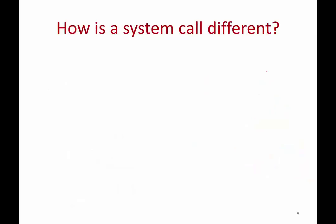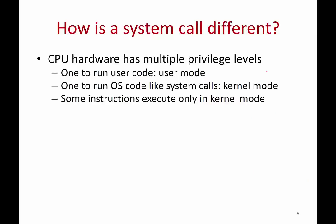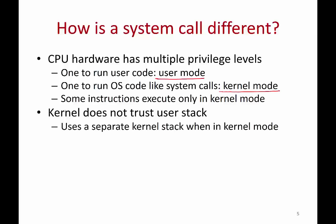So how is a system call different from a function call? First of all, CPU hardware — all modern CPUs — have multiple privilege levels. When you're running user code, the CPU has a certain privilege level set, and when you're running operating system code, you run at a higher privilege level with more powers. When running user code, the CPU is said to be in user mode; when running kernel code, it is in kernel mode. Some instructions only execute in kernel mode — for example, instructions that allocate memory or access the disk. The CPU checks if it's in kernel mode; only then will it execute that instruction. If you're in user mode, it will refuse.